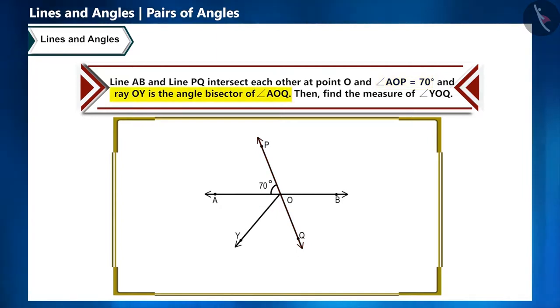Now we have to draw ray OY which is the bisector of angle AOQ. This means ray OY divides this angle into two equal parts, and we need to find angle YOQ. Try to solve this question yourself.